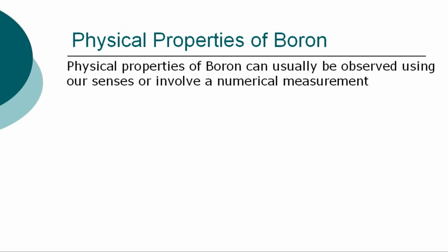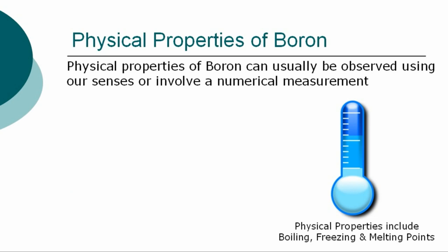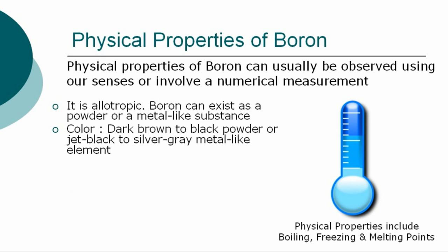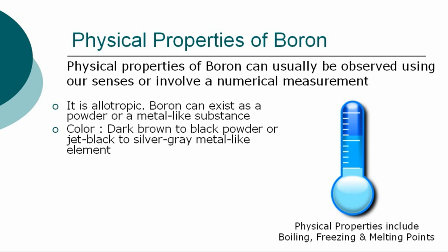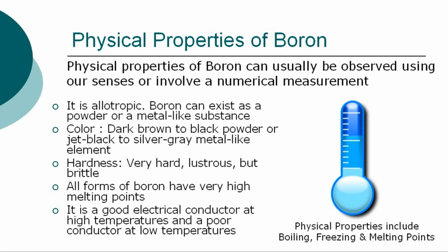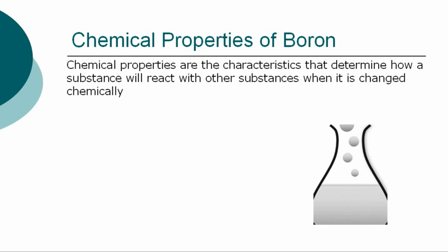The more specific physical properties of boron can usually be observed using our senses, or involve a numerical measurement, such as determining its boiling, freezing, and melting points. Boron is allotropic and exists as a powder or a metal-like substance. Its color ranges from a dark brown to black powder, or a jet black to silver gray metal-like element. Its crystalline form is very hard, lustrous, but brittle. All forms of boron have very high melting points. Boron is a good electrical conductor at high temperatures, and a poor conductor at low temperatures.